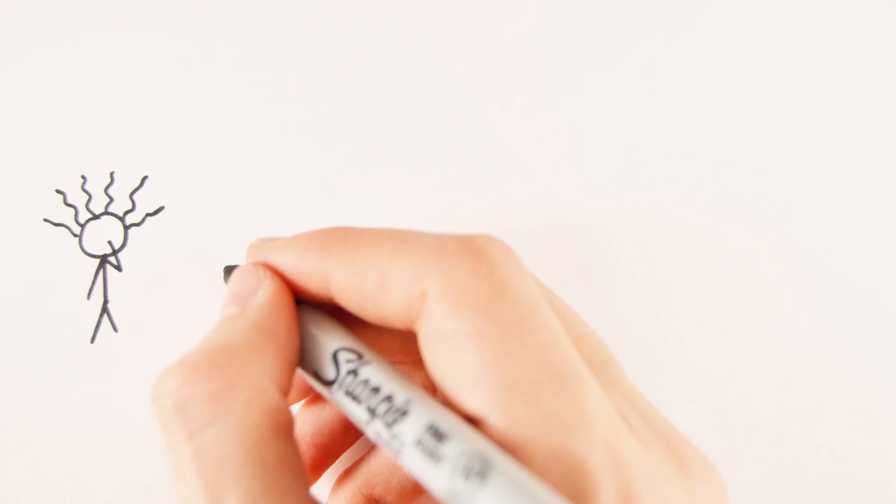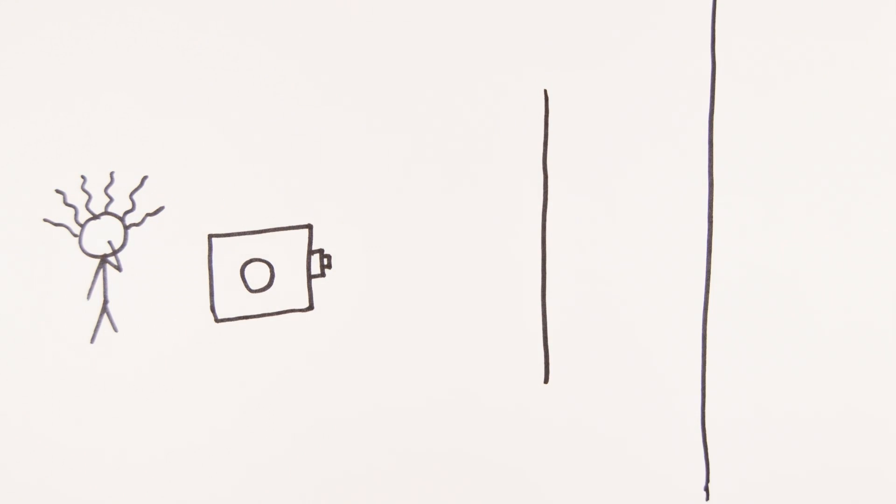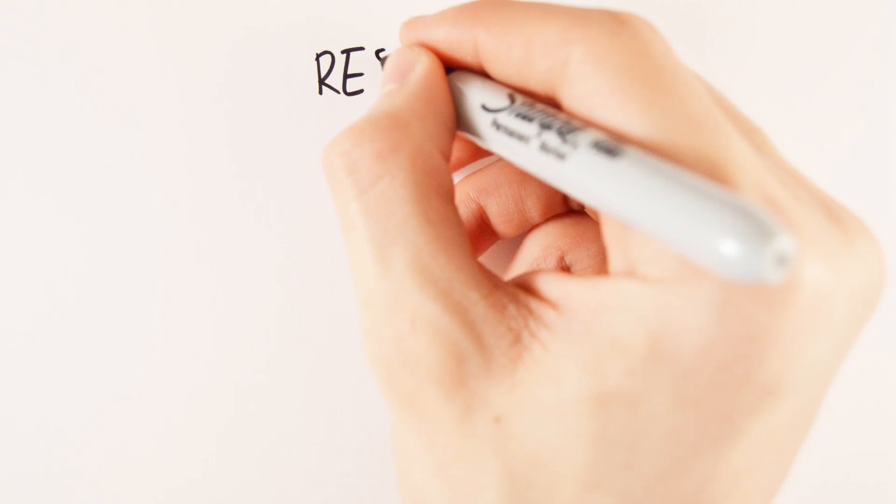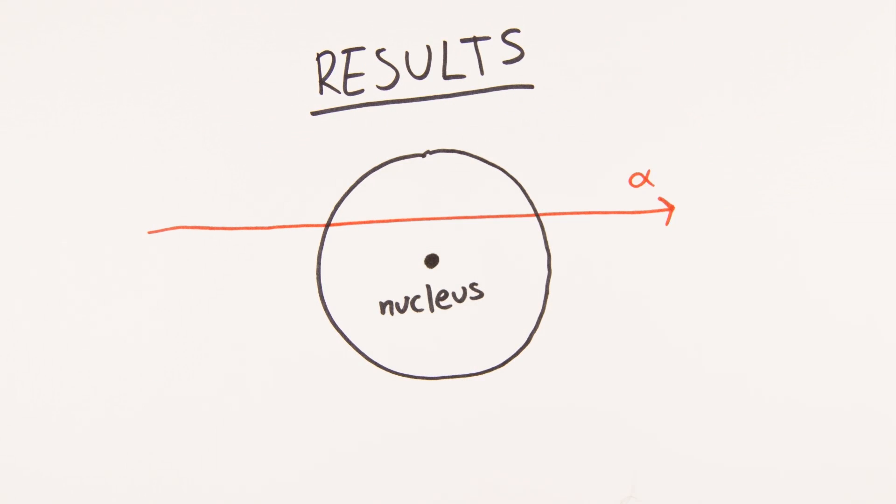A scientist called Ernest Rutherford designed an experiment to test the Plum Pudding Model. A beam of alpha particles was aimed at a very thin sheet of gold foil and the passage was detected. The scientists expected the alpha particles to pass straight through the foil, but something else also happened.